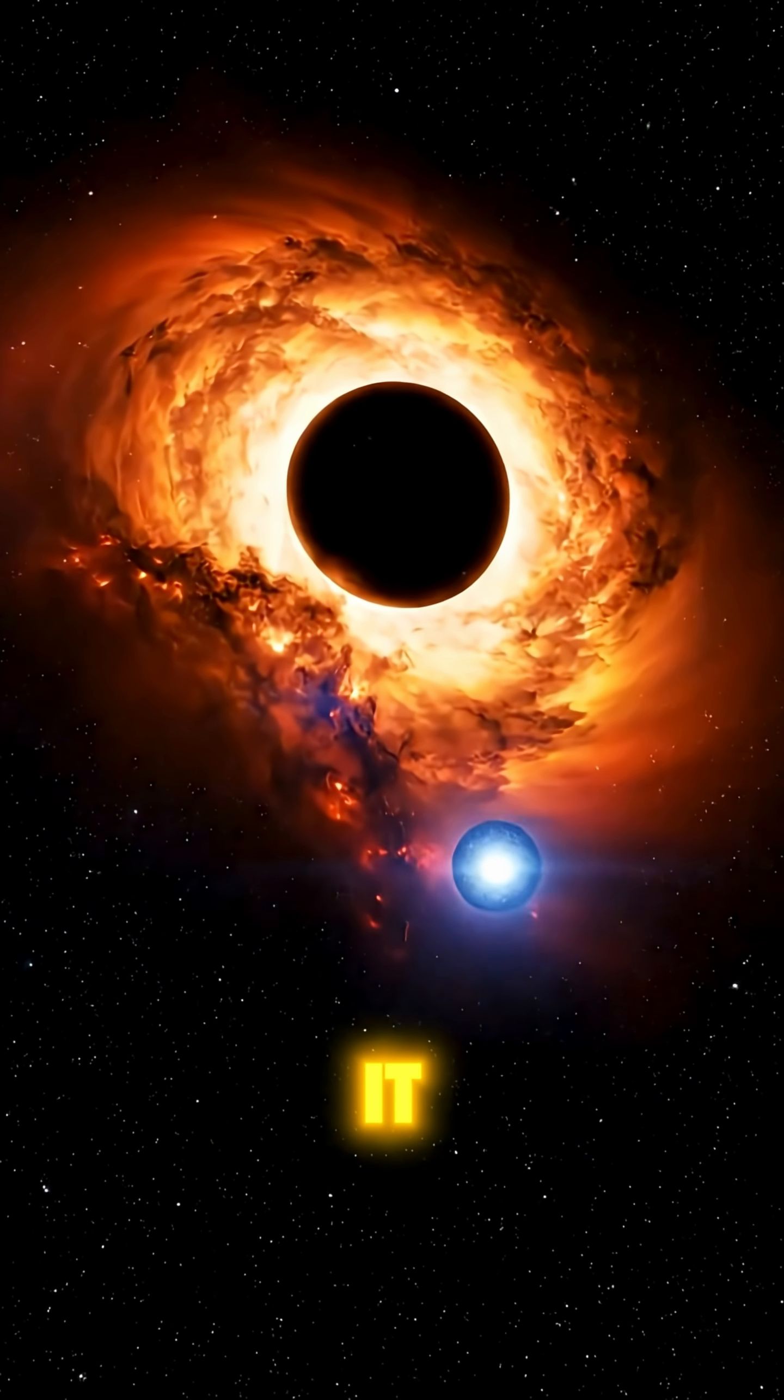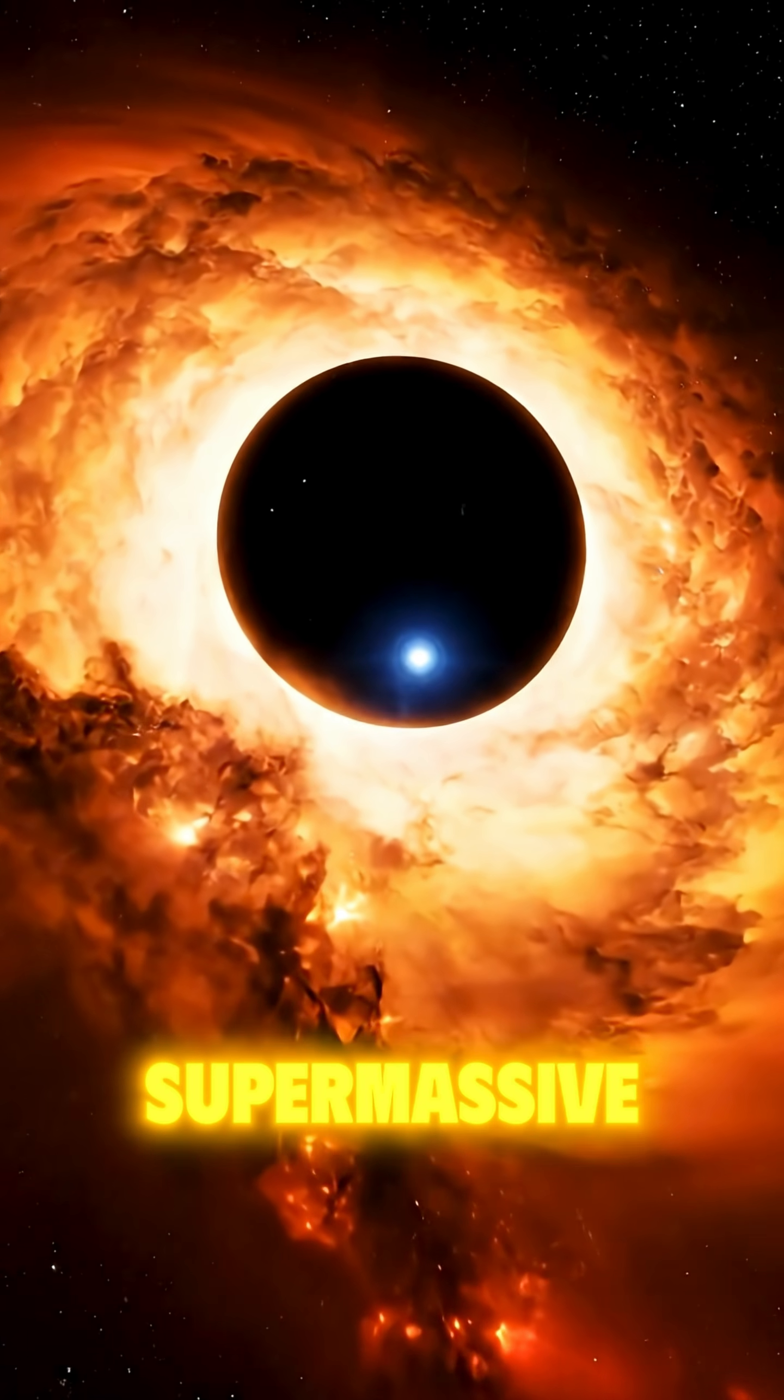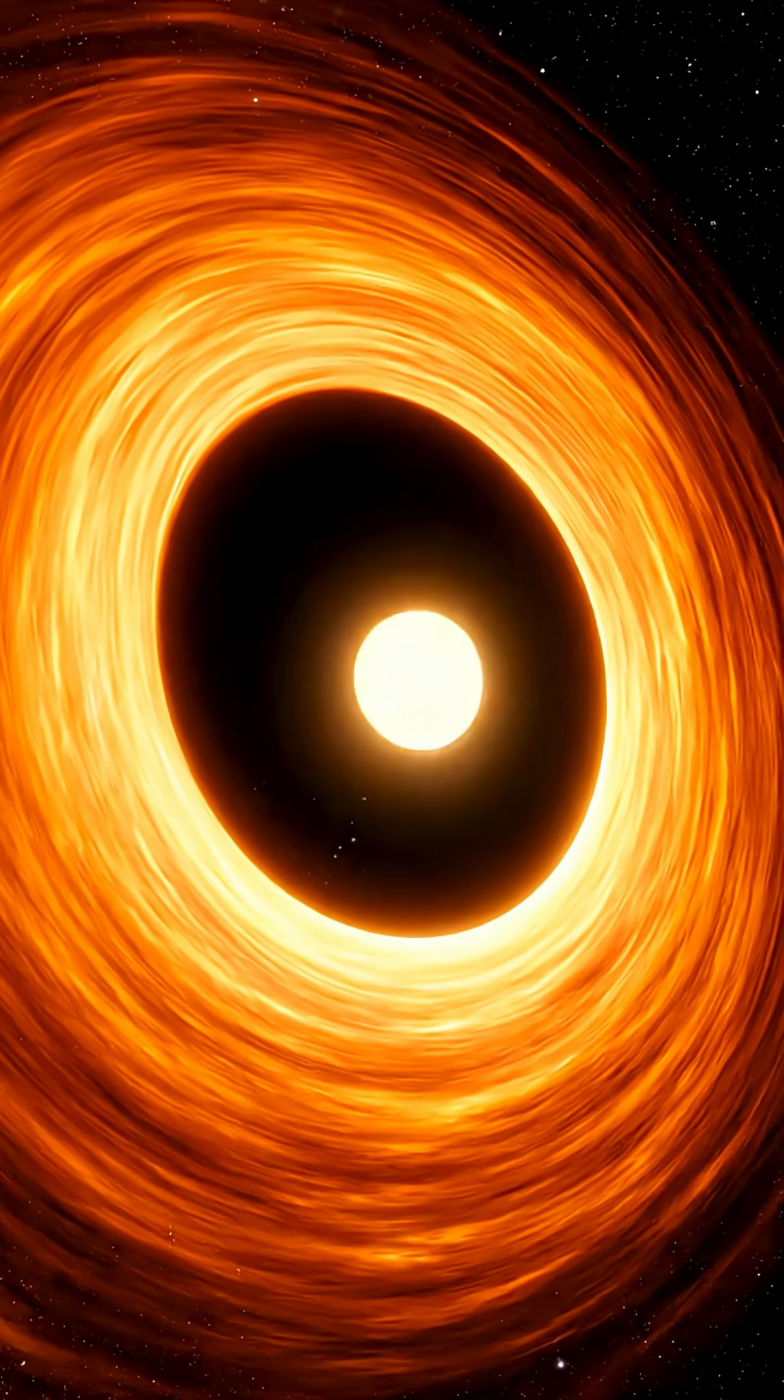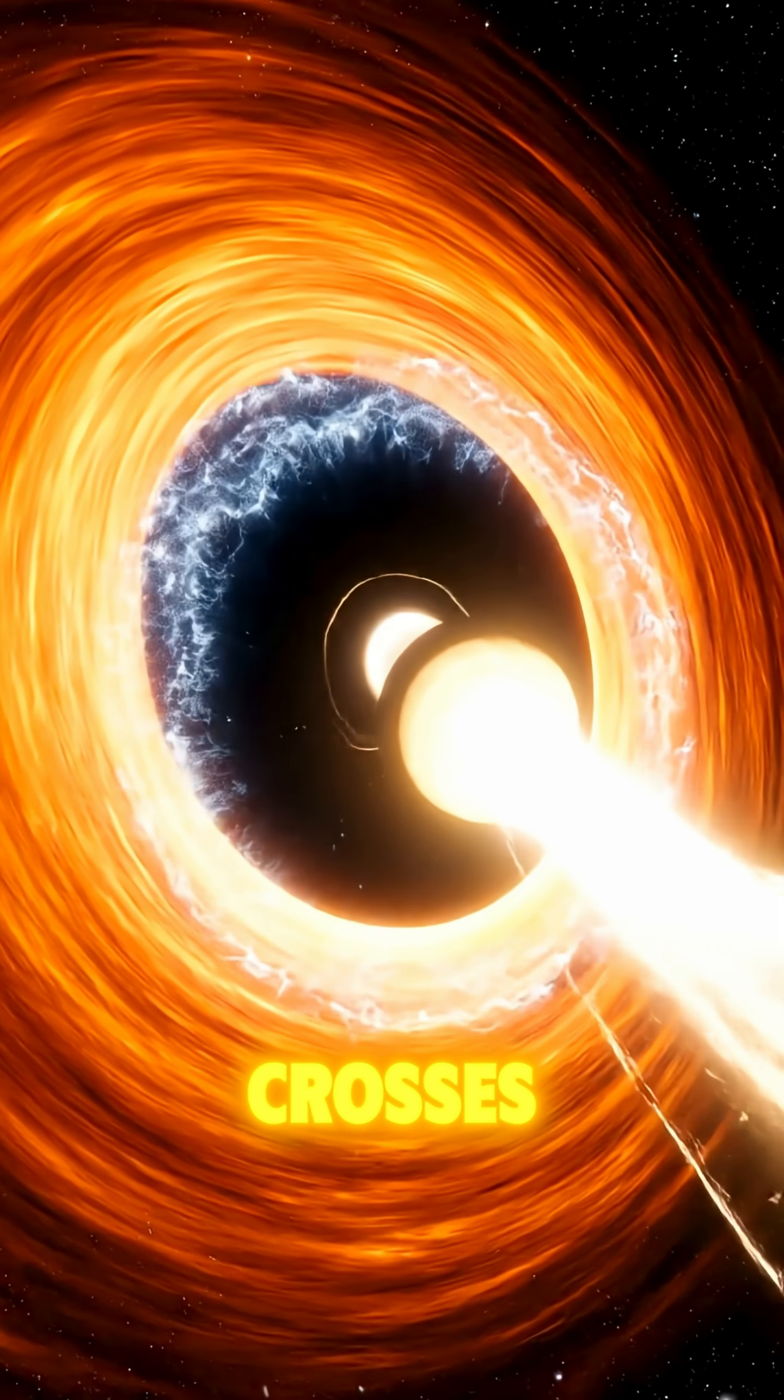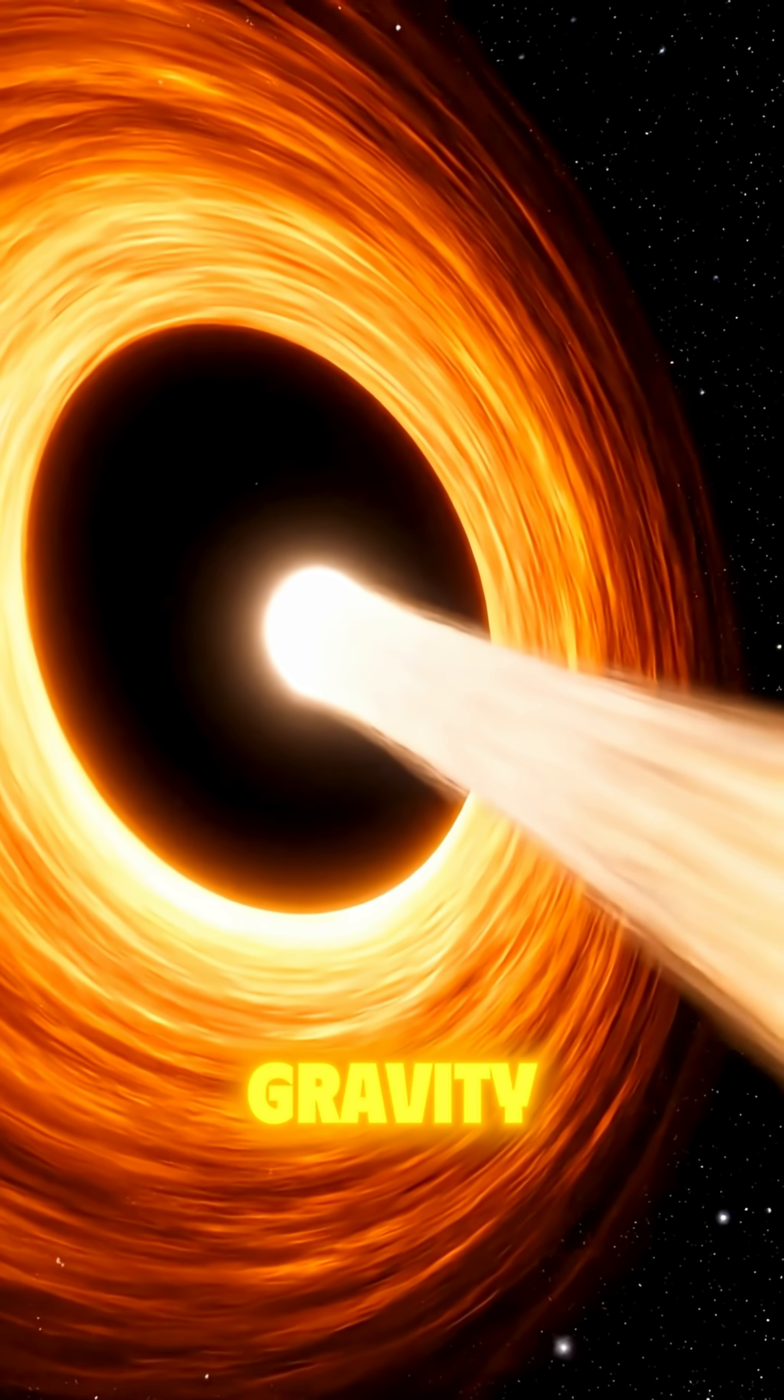The star is moving. It has strayed into the Forbidden Zone. It's heading straight for a supermassive black hole. As it crosses the Roche limit, the black hole's tidal force overcomes the star's own gravity.